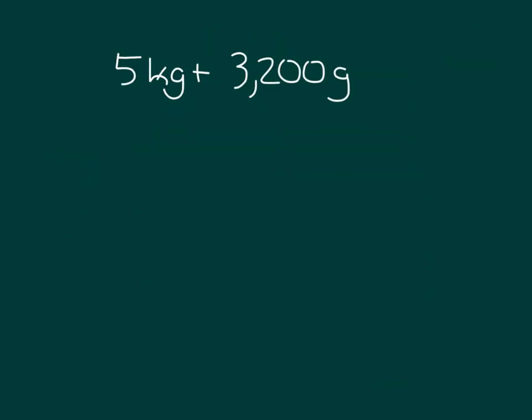Here we have another problem. I've written it horizontally from left to right. We have 5 kilograms plus 3,200 grams. What do you notice here? You may notice that one of these is within kilograms, and one of these is within grams. Much like we did when we were talking about distances, we are going to rename the kilograms to grams.